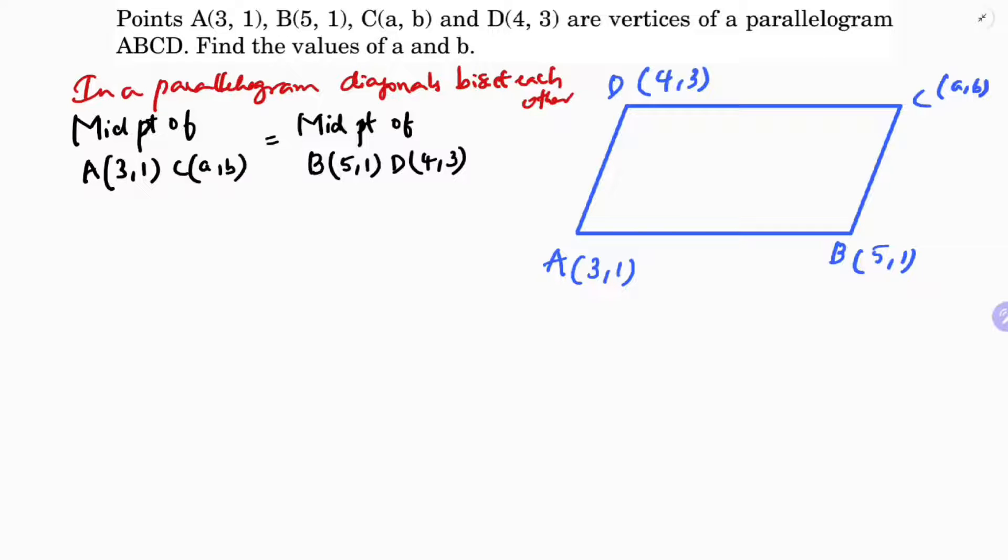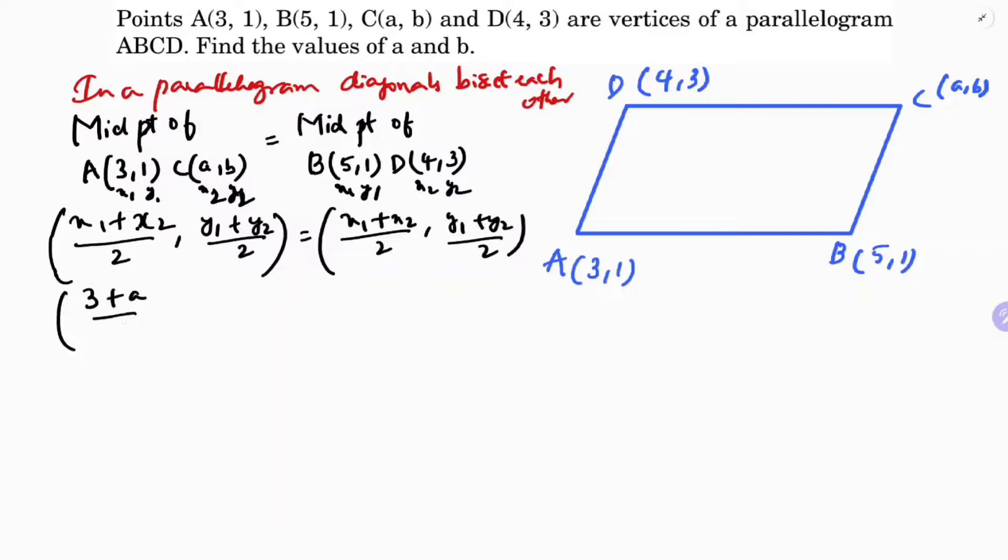So midpoint formula - I will write midpoint formula. That is (x1 + x2)/2, (y1 + y2)/2. If you substitute the values: (3 + a)/2, (1 + b)/2 equals (5 + 4)/2, (1 + 3)/2.